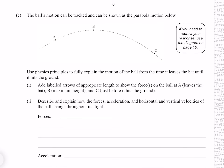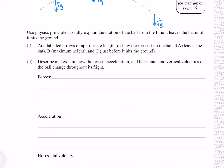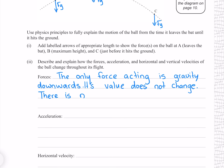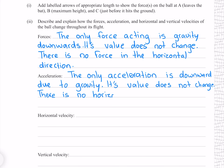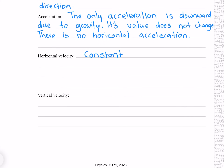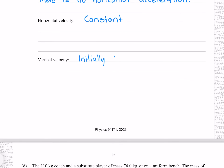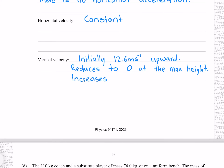The ball's motion can be shown as parabolic. Use physics principles to explain the motion from when it leaves the bat until it hits the ground. The only force acting is gravity downwards; its value does not change and there is no force in the horizontal direction. The horizontal velocity is constant, while the vertical velocity starts at 12.6 m/s upward, reduces to zero at maximum height, then increases in the downward direction.